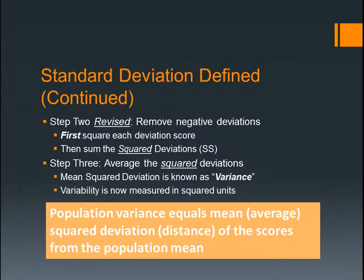Step two, revised: you remove your negative deviations. First you square each deviation score, then sum the squared deviations — that's where you see SS in the textbook. Step three is when you average the squared deviations. The mean squared standard deviation is the variance. Variability is now measured in squared units — five squared is 25, five times five.